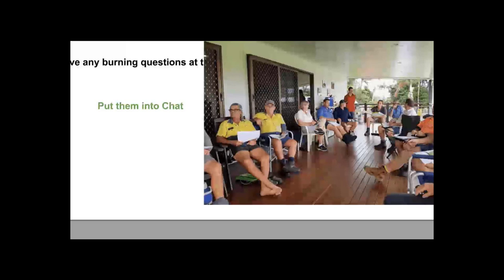Simon's question is about what percentage of carbohydrates plants create during photosynthesis are pumped into the soil as sugars rather than going into plant growth. You will see different figures, but as a rule of thumb — and it depends on the situation, the plant, environment, climate, etc. — somewhere between 10 and 30% is probably on the money.